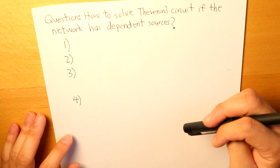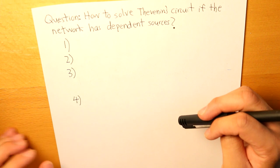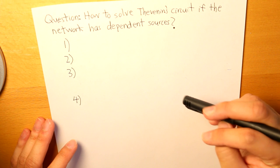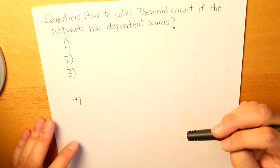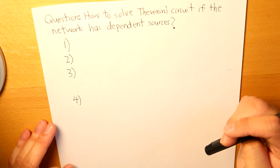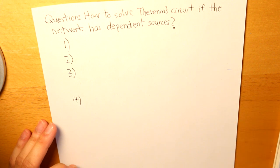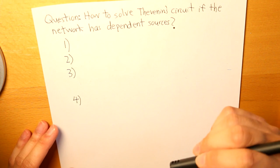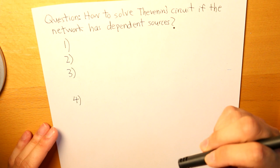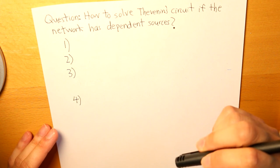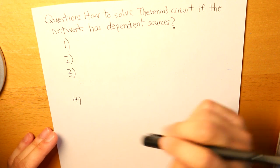So today's video, we will be talking about Thevenin's Theorem. In fact, this is the third part of my Thevenin's Theorem series. And the question is, how do we solve a Thevenin's circuit if the network has dependent sources?